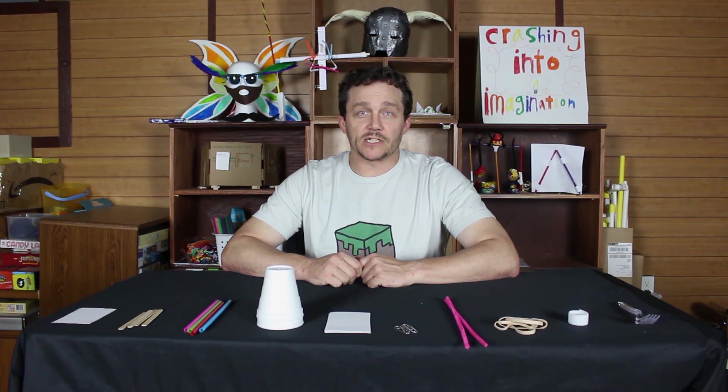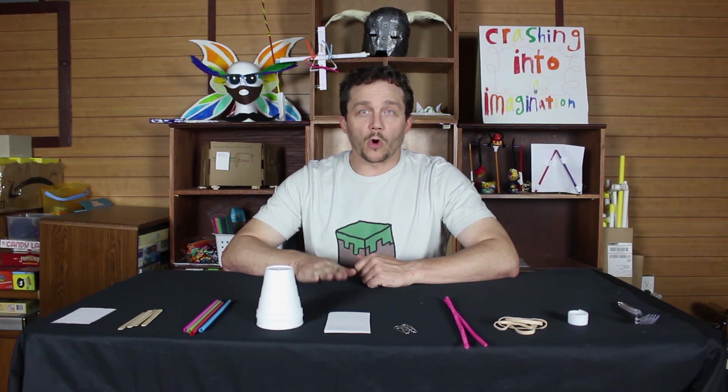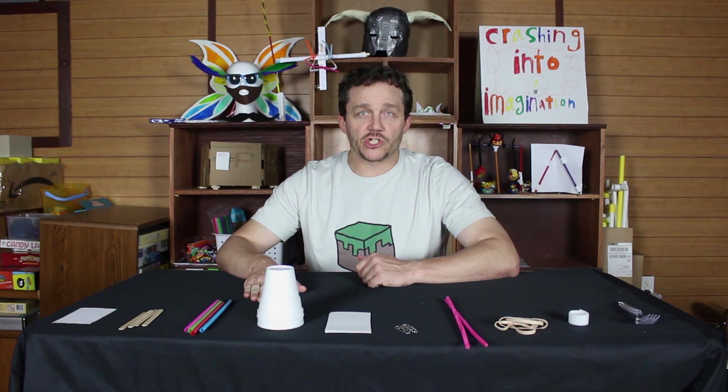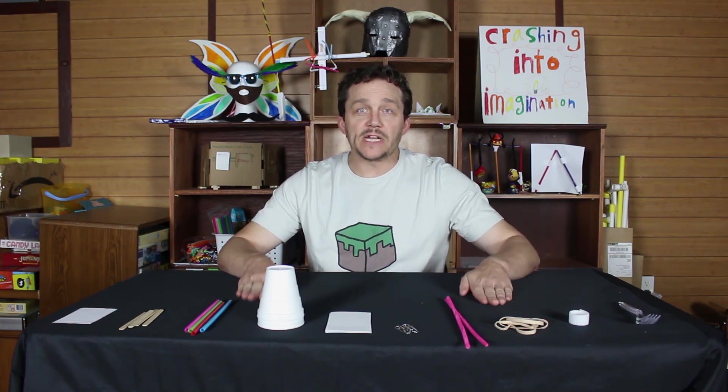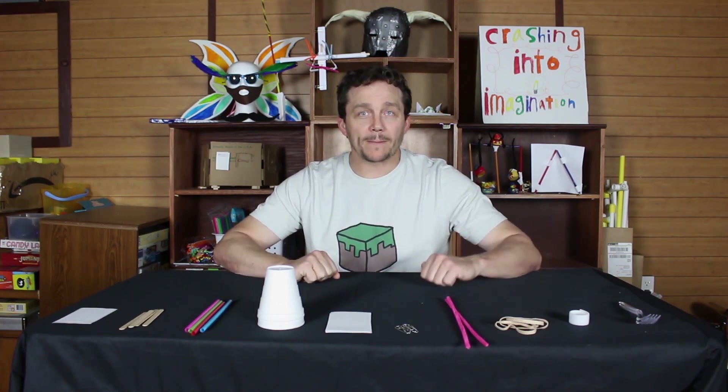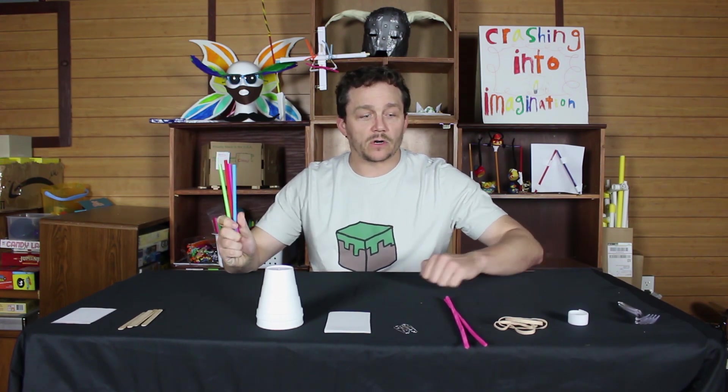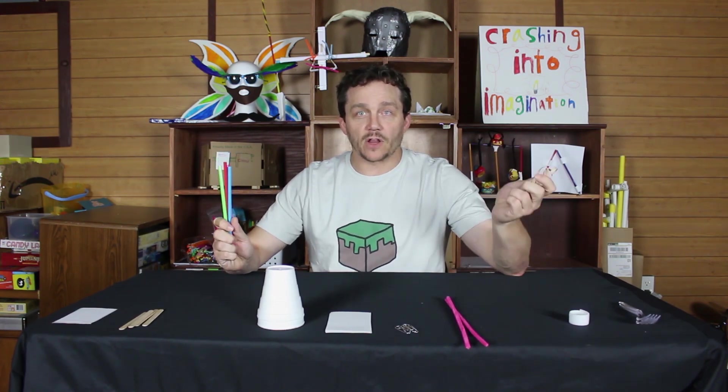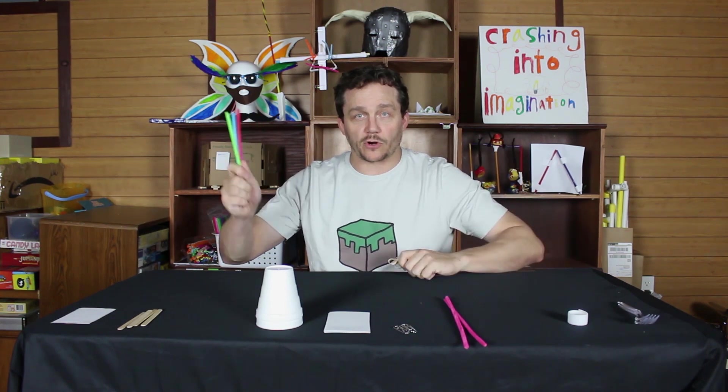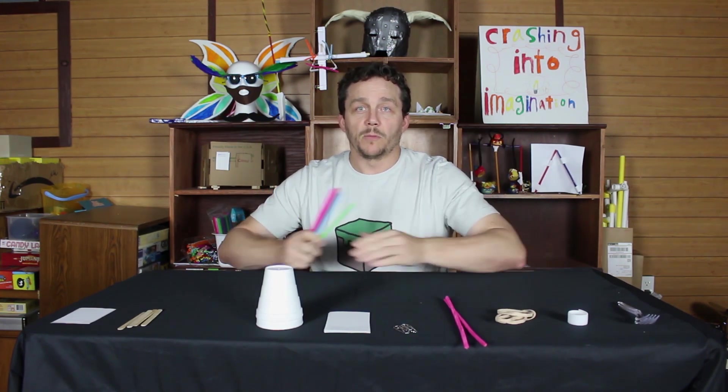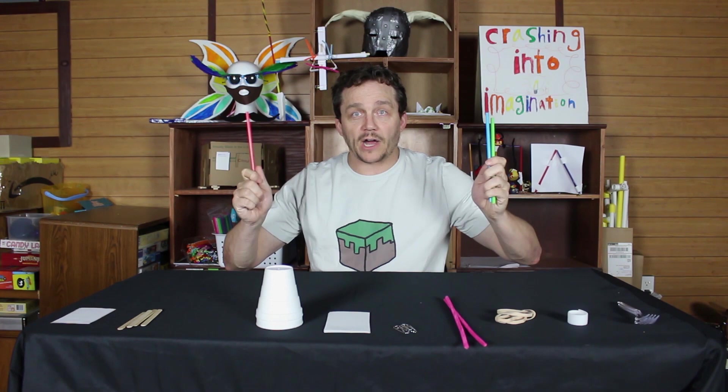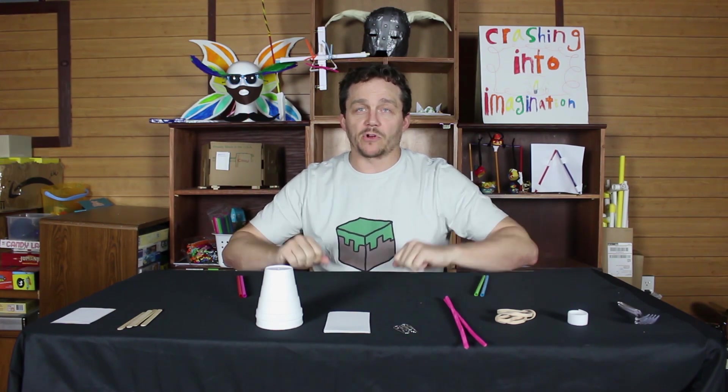The trick to this challenge is we will get more points for each material that is unique in each tower. What that means is if we just use straws for one tower and rubber bands for another tower, we get points for the straws and rubber bands. But if we use straws on both towers, we don't get any points for the straws. We want to make sure our two towers are completely unique.